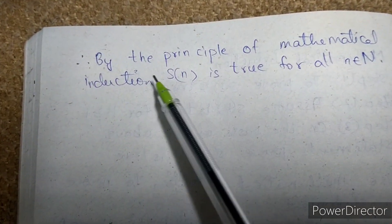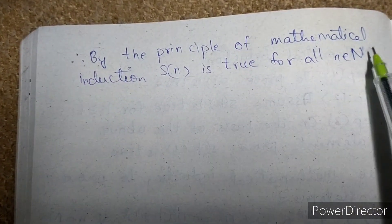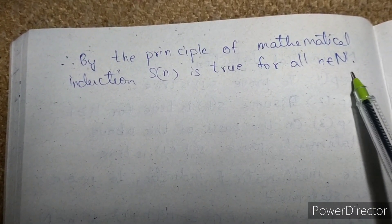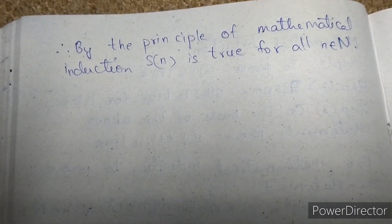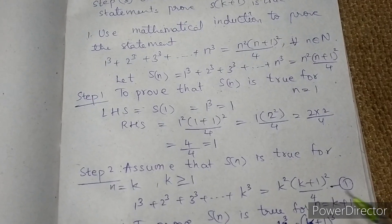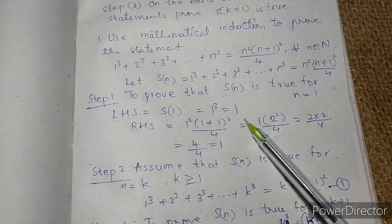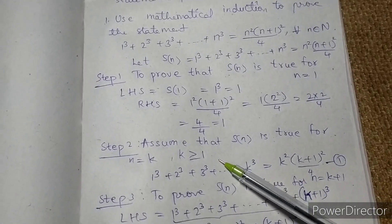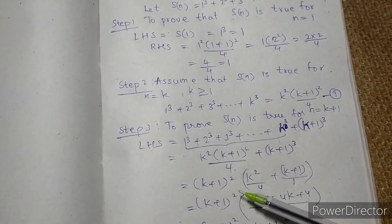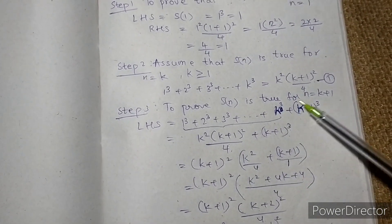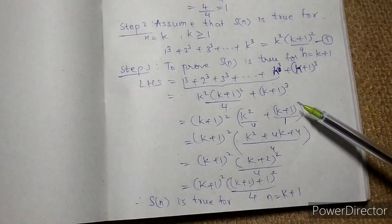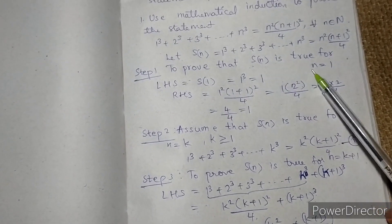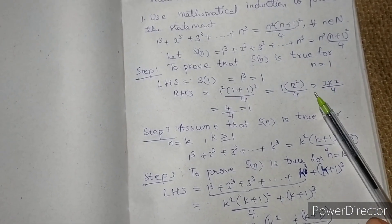Therefore, by the principle of mathematical induction, S(n) is true for all n belonging to ℕ. We proved it for n = 1, assumed it for n = k, and proved it for n = k+1, thereby proving the statement is true for all natural numbers.